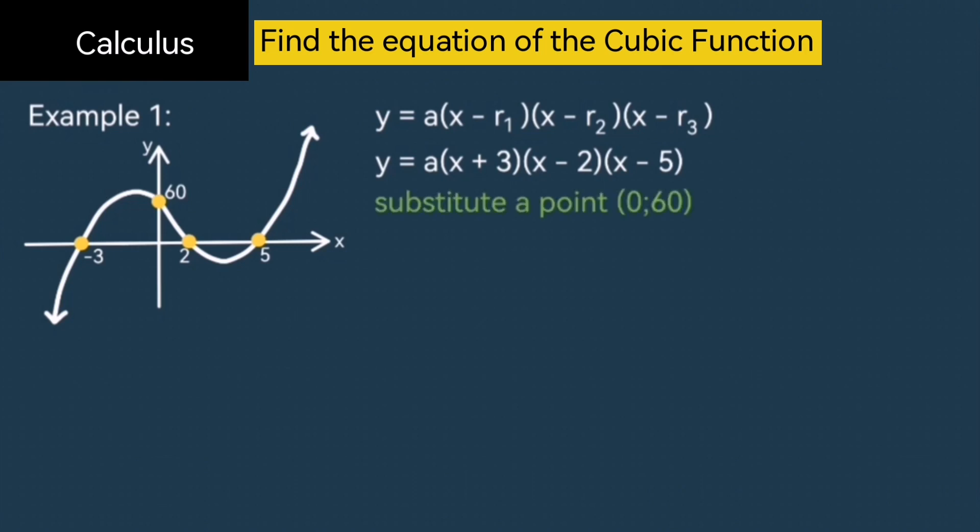So, substitute the y-intercept of 0 and 60. 0 should go with the x values, and 60 should go with the y value. Now, simplify that. Divide both sides by 30, and a is equal to 2.